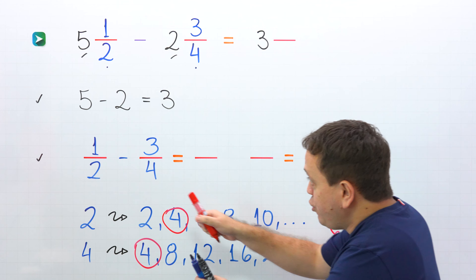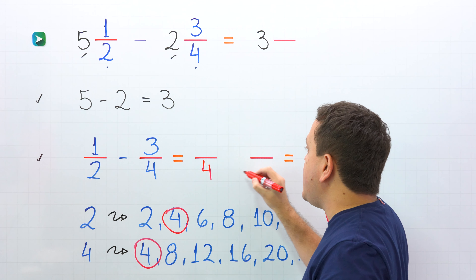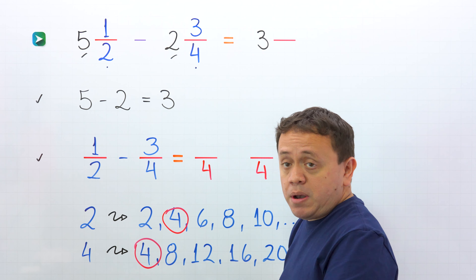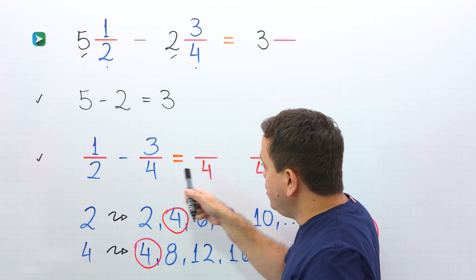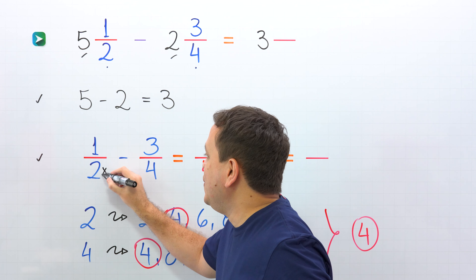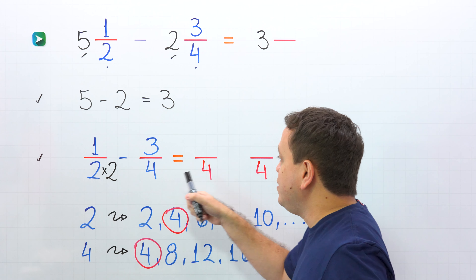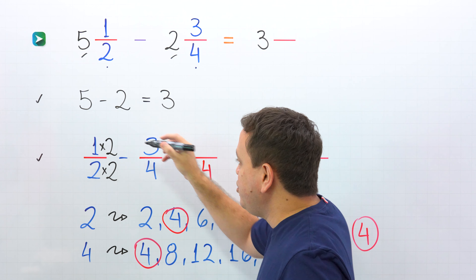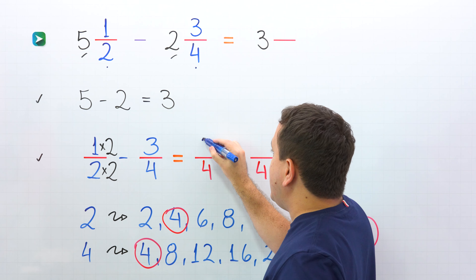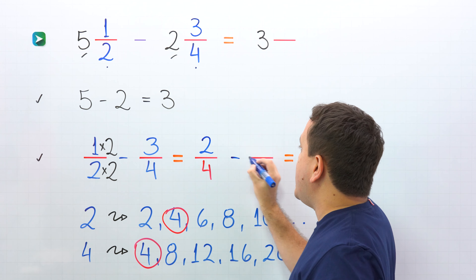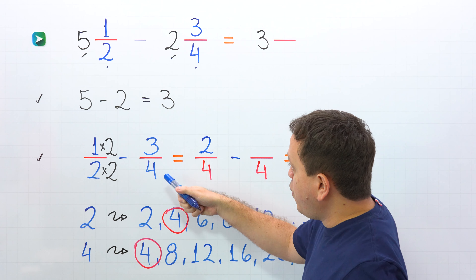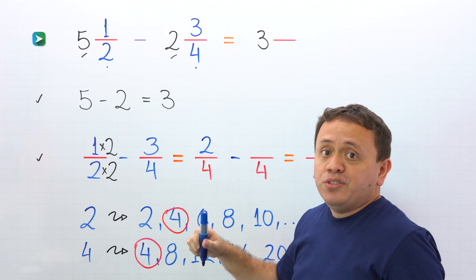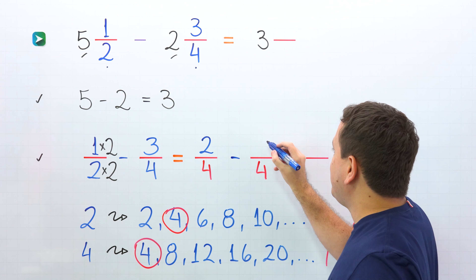Then for each fraction, we need an equivalent fraction with a denominator of 4. Let's start with 1 half. By what number should I multiply 2 to get 4? By 2, because 2 times 2 gives us 4. Whatever we do to the bottom, we must do to the top, and 1 times 2 gives us 2. Then we have the minus sign, and over here, 3 fourths — hold on. 3 fourths already has a denominator of 4, so we don't need to make any changes. We just put the same fraction.